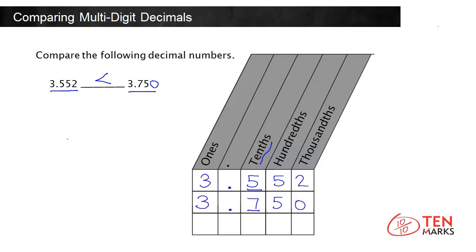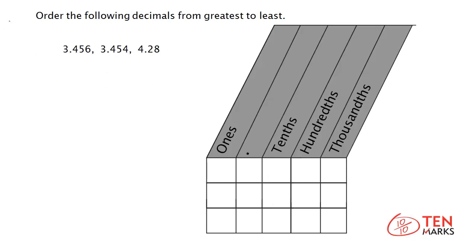Now that we know how to compare two numbers, let's take a set of 3 decimals and order them. Order the following decimals from greatest to least. We have 3 and 456 thousandths, 3 and 454 thousandths, and 4 and 28 hundredths.